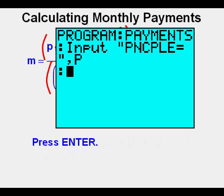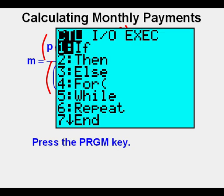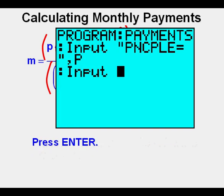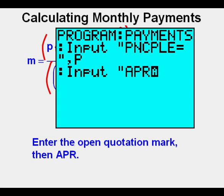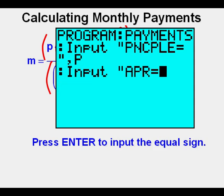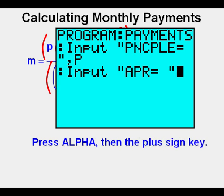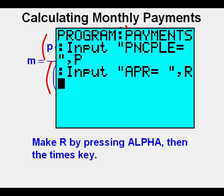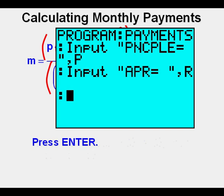Press enter. Now it's ready for you to enter the next line of code, which will be very similar to the first line. Press the program key, arrow once to the right for the input-output submenu, press enter. Turn on the caps lock by pressing second, then the alpha key. Enter the open quotation mark, then APR for annual percentage rate. Access the test menu by pressing second, then the math key. Press enter to put in the equal sign. Make a space by pressing alpha then the zero key. Make the closing quotation mark by pressing alpha, then the plus sign key. Press the comma key above the seven key. Make the R by pressing alpha, then the times key on the right of the keypad. Press enter. You have entered your second line of code.